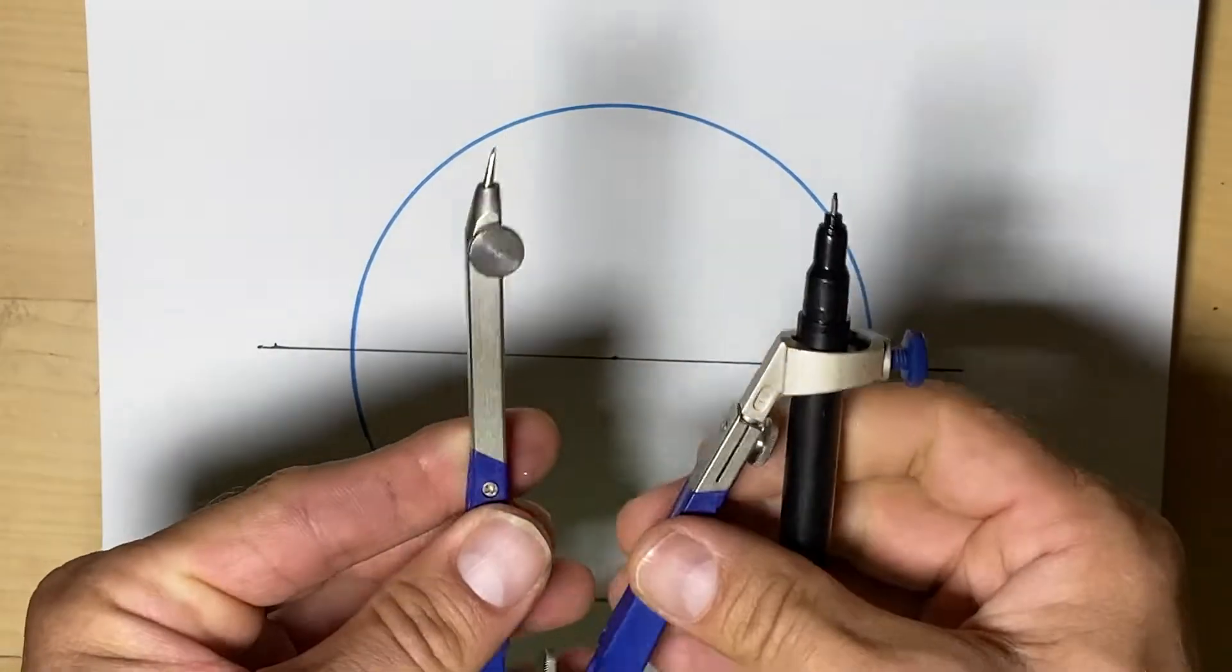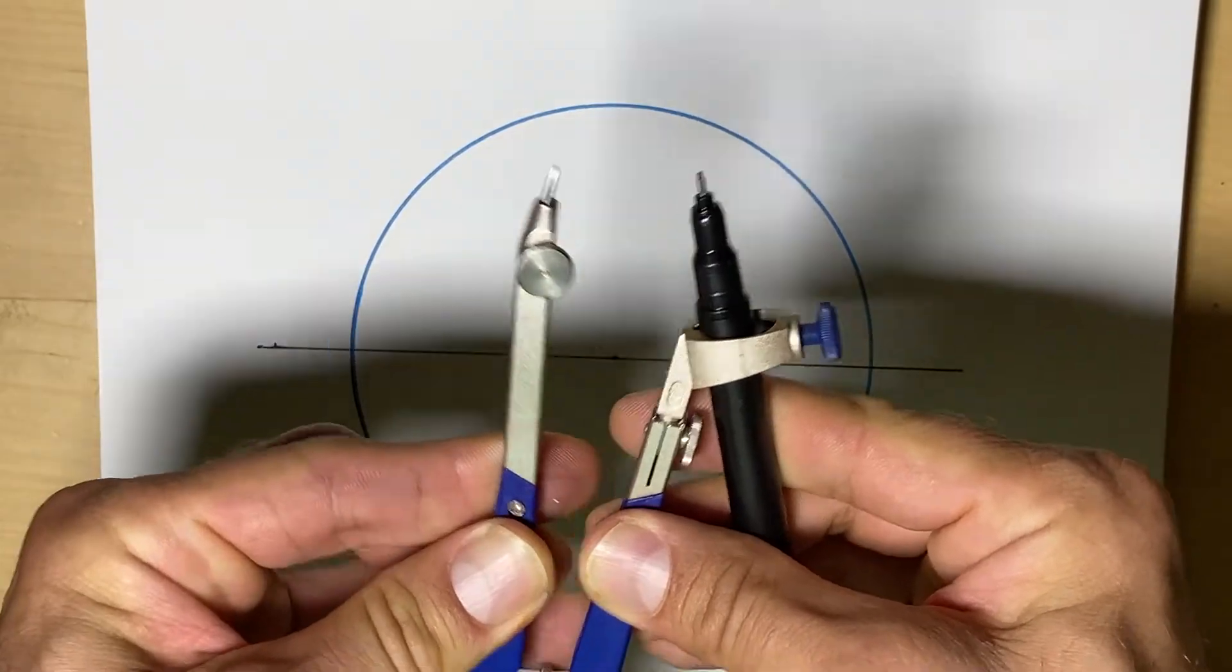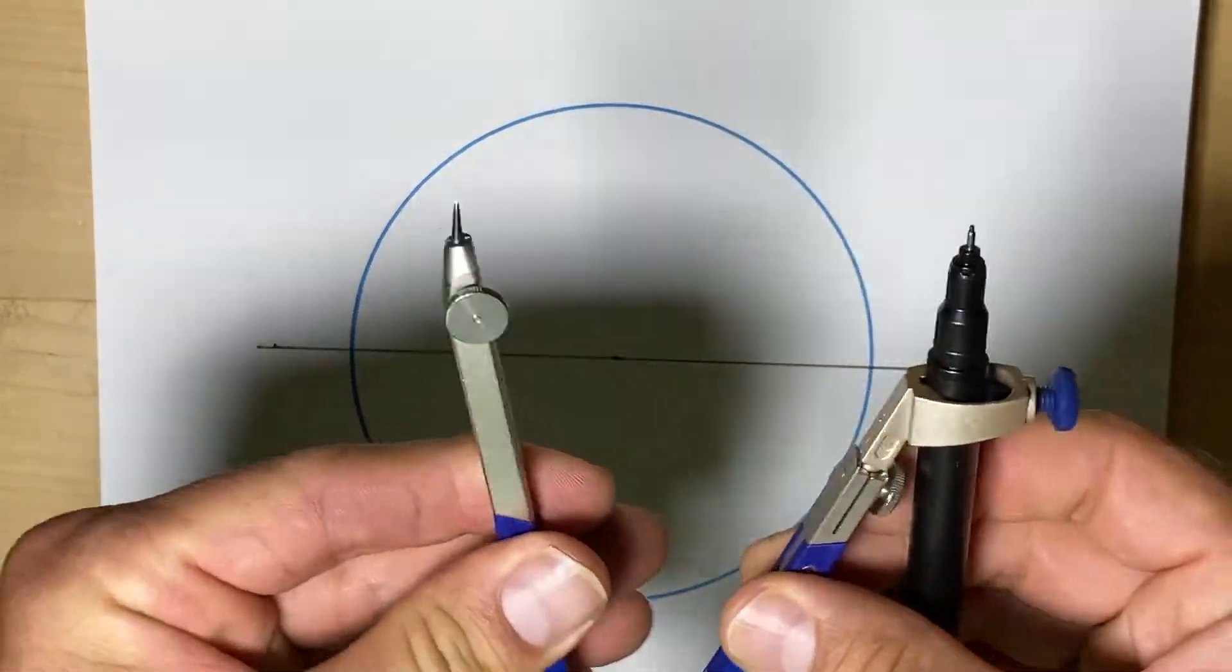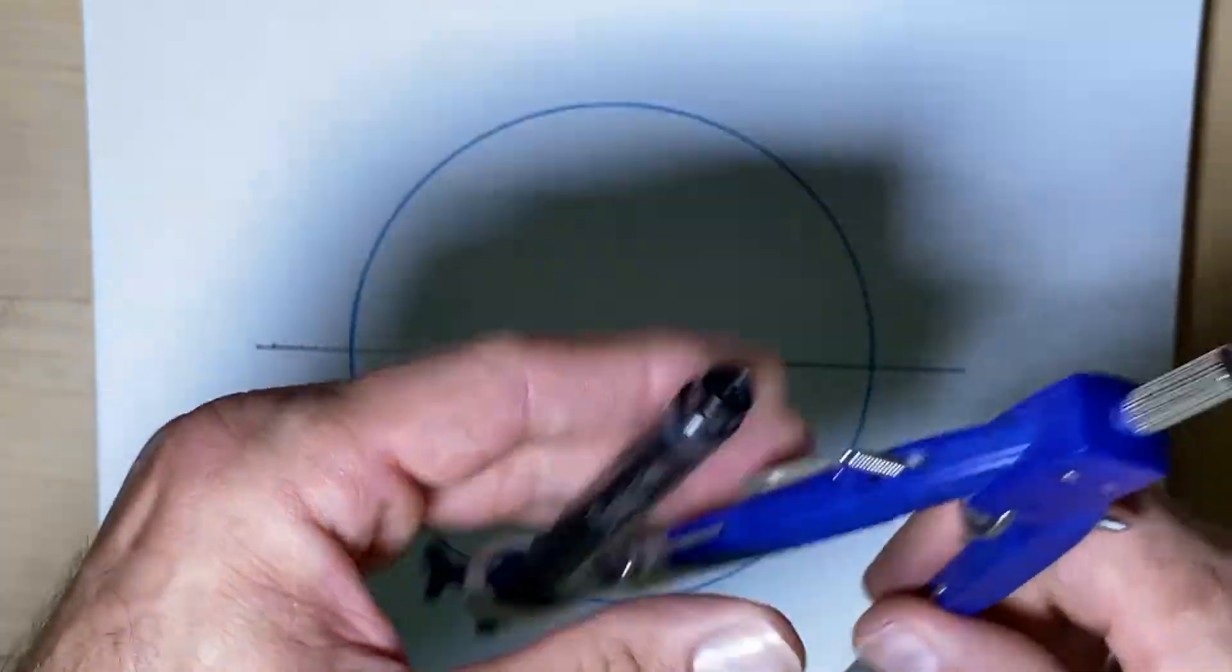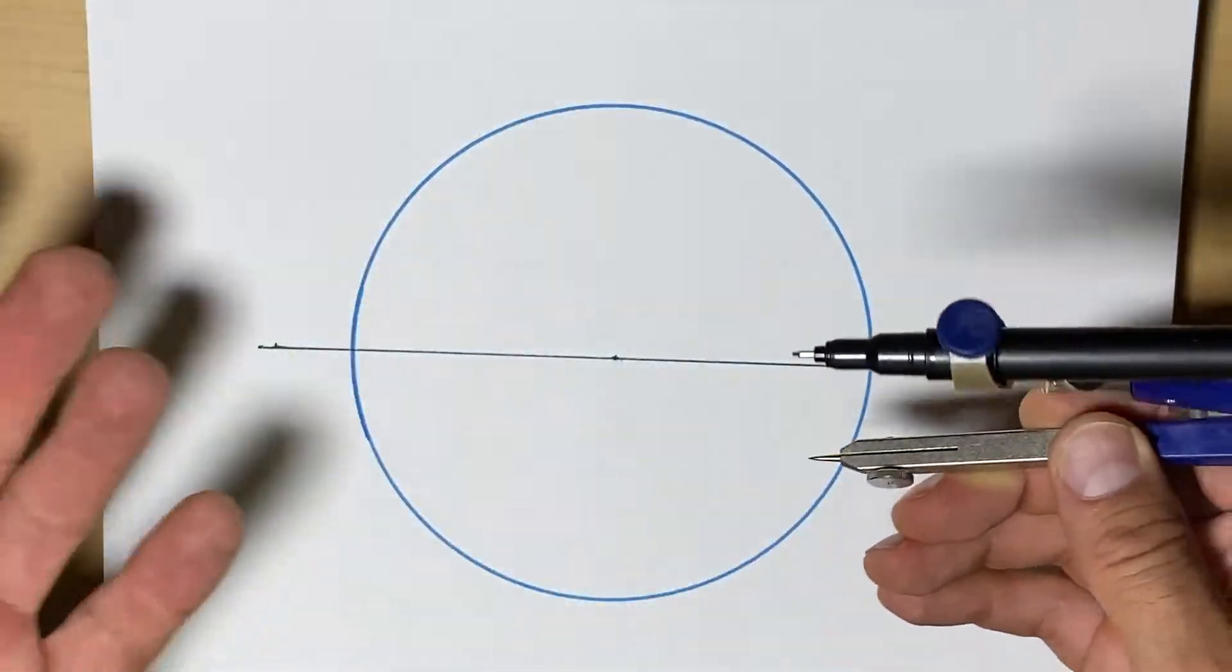So we'll start with our compass. We want to adjust it and make sure our pencil and our tip, the pointy tip, are even. And to cut it in half, we have to go past halfway.